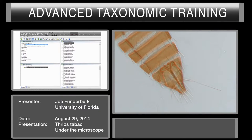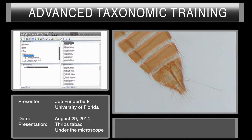We have 173 species remaining. I'm going to proceed with the next best character. It has gone to the metanotum — specifically the metanotal median CD.